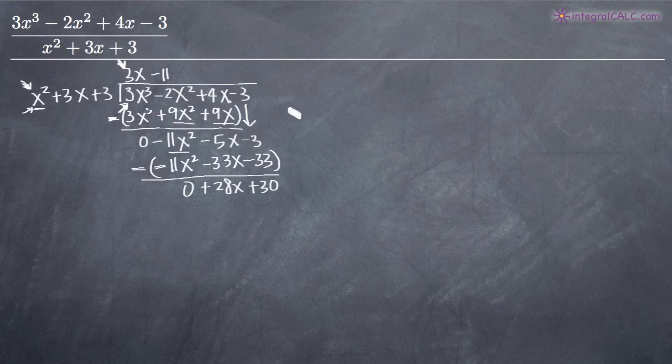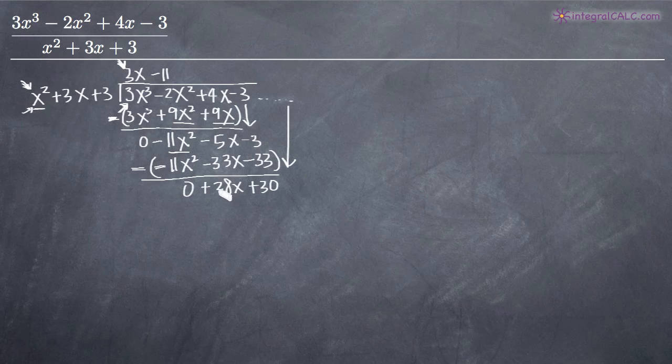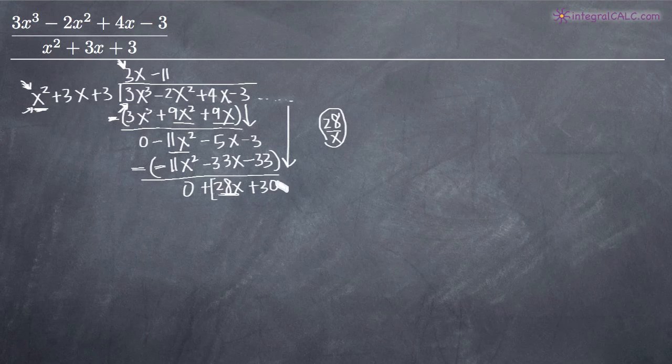At this point, we don't have any more terms to bring down. We could figure out what to multiply x² by to get 28x, but we'd need to multiply by 28/x. Whenever we need to multiply by a fraction, we've reached the end, and we call what's left the remainder, because multiplying by a fraction gets too complicated.